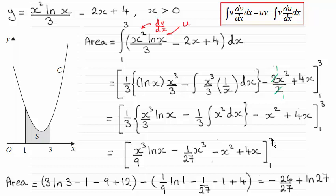It's just a question of substituting 3 through, then subtracting what we get when we put 1 through. Remember that the natural log of 1 is 0, so that just leaves us with 3 times the natural log of 3. Using the power rule, that becomes the natural log of 3 cubed — in other words, the natural log of 27. The constants come to minus 26 over 27. I'd personally prefer to write natural log of 27 minus 26 over 27 to lead with a positive term, but since the question says give it in the form a over b plus the natural log of c, that's the reason I've given it in that form.